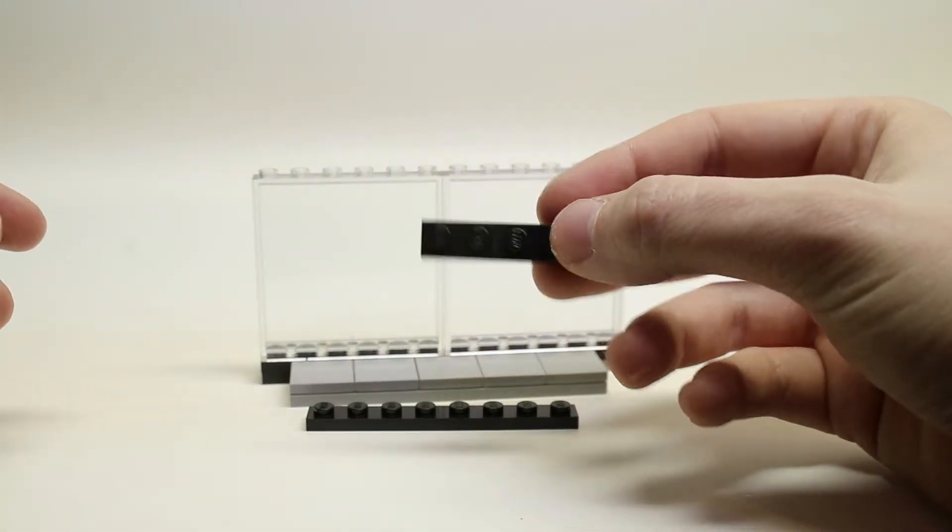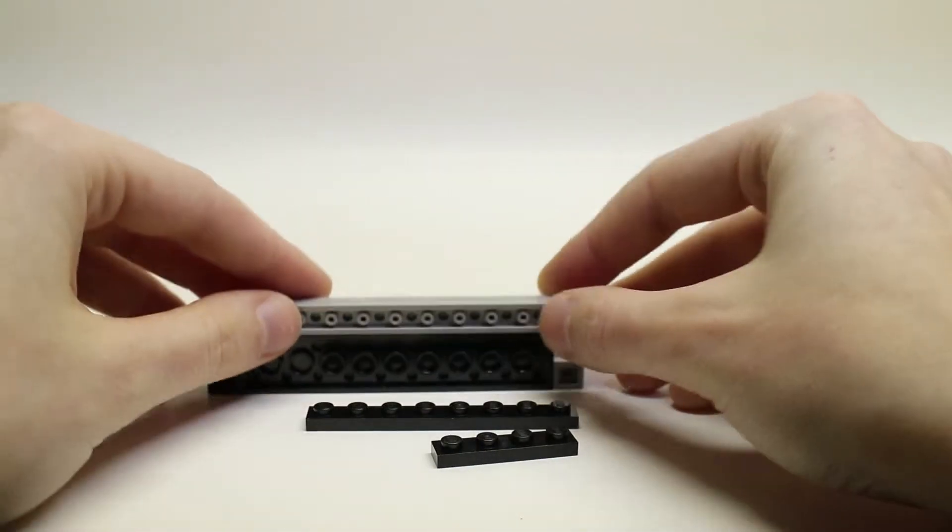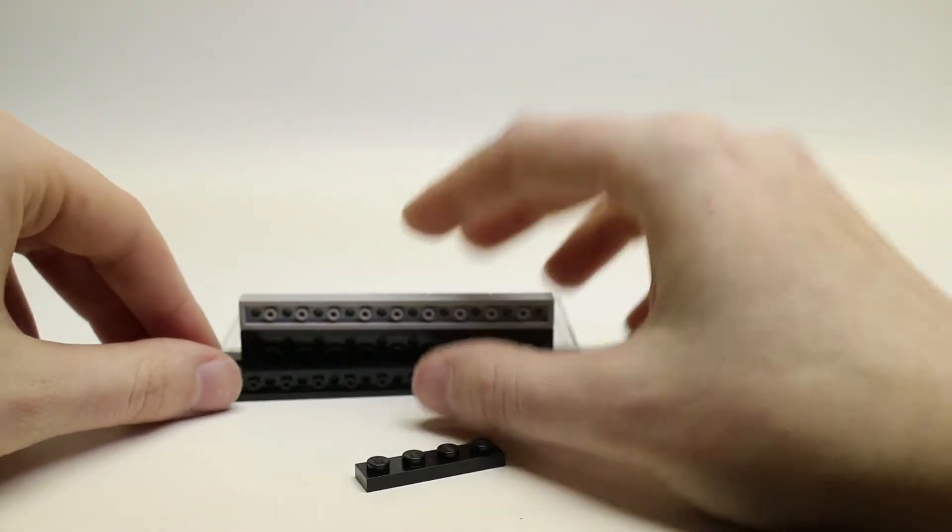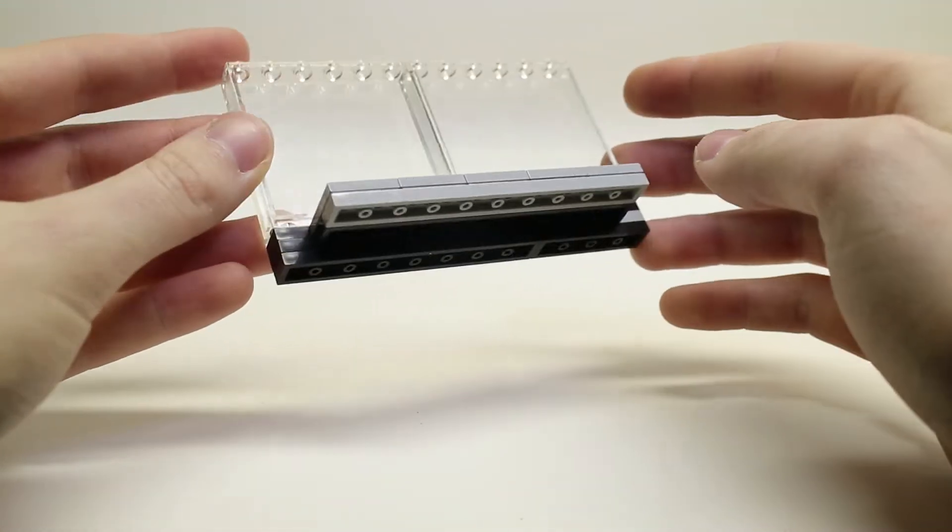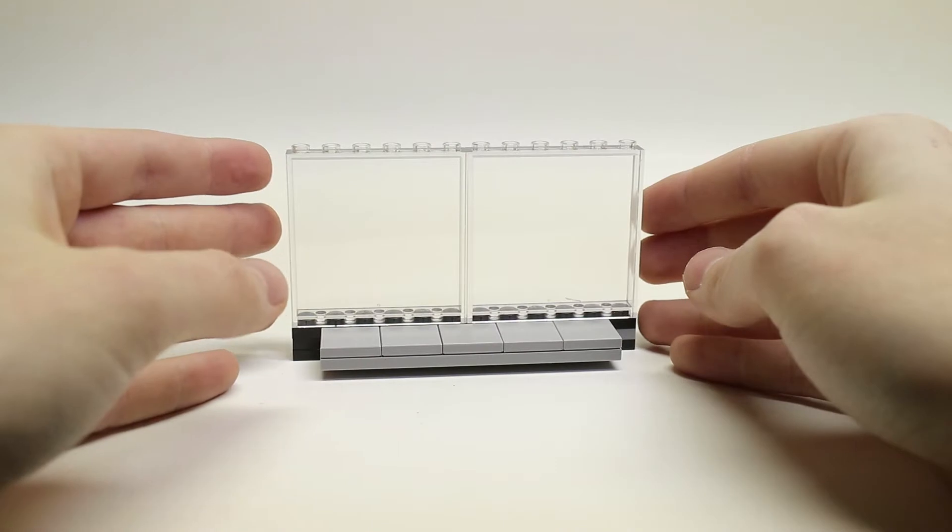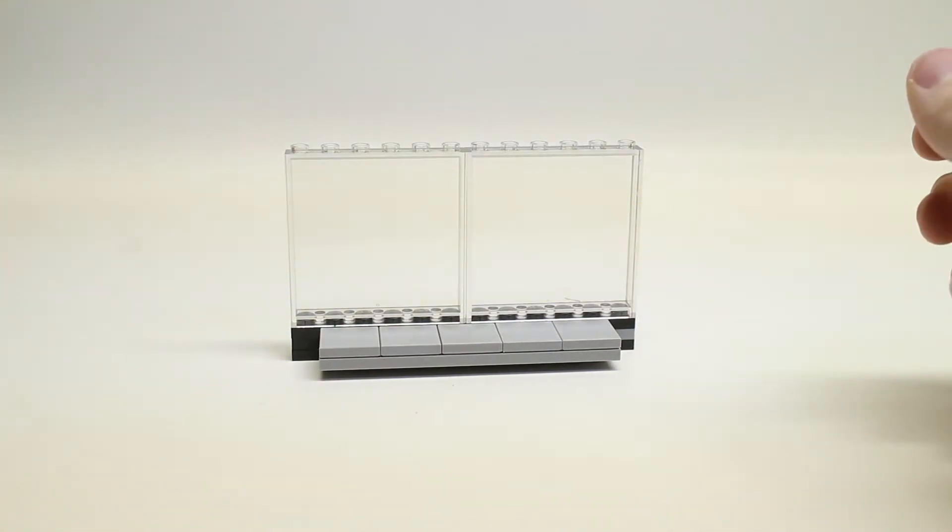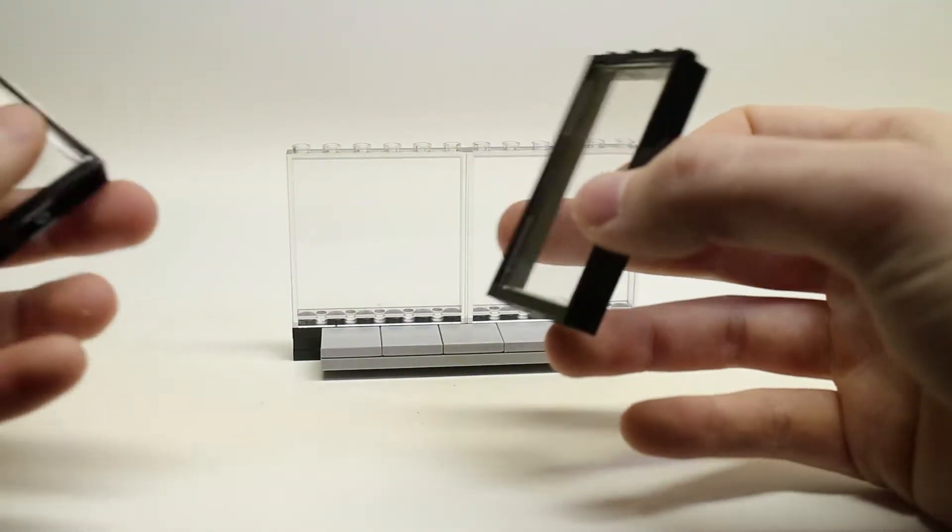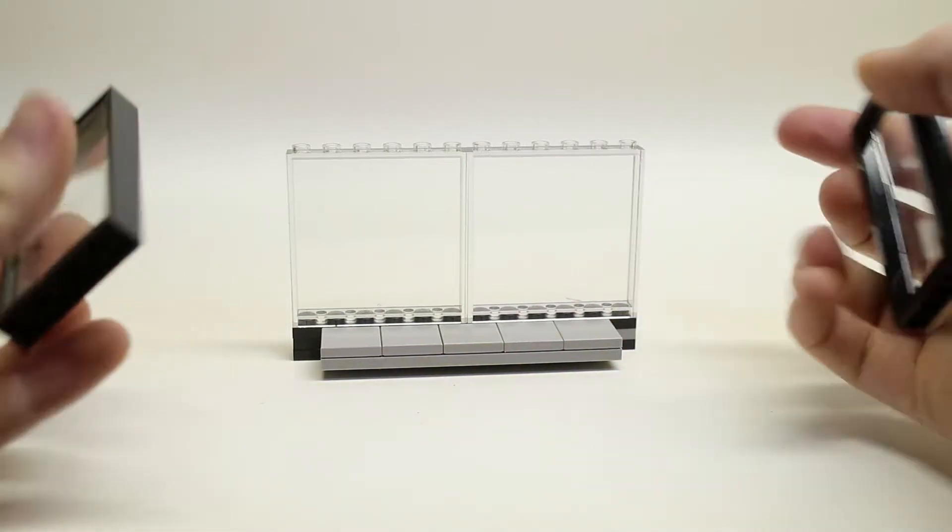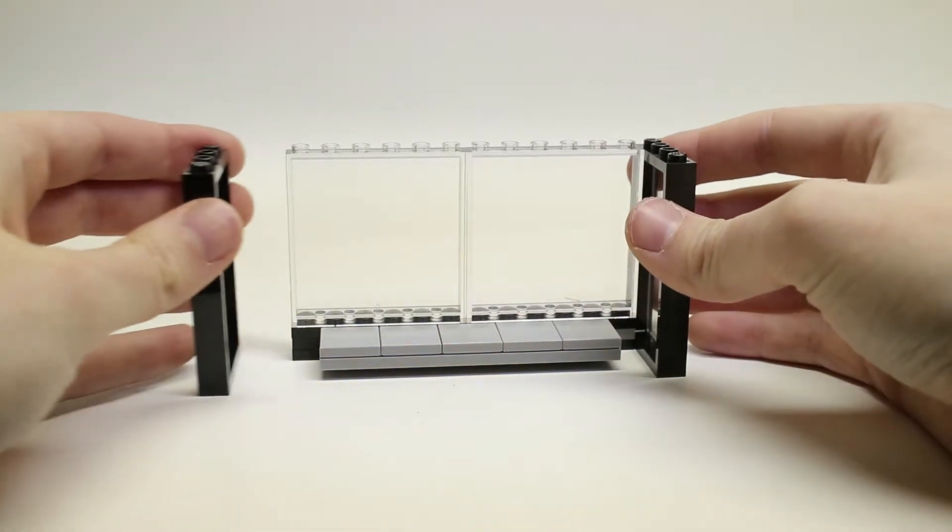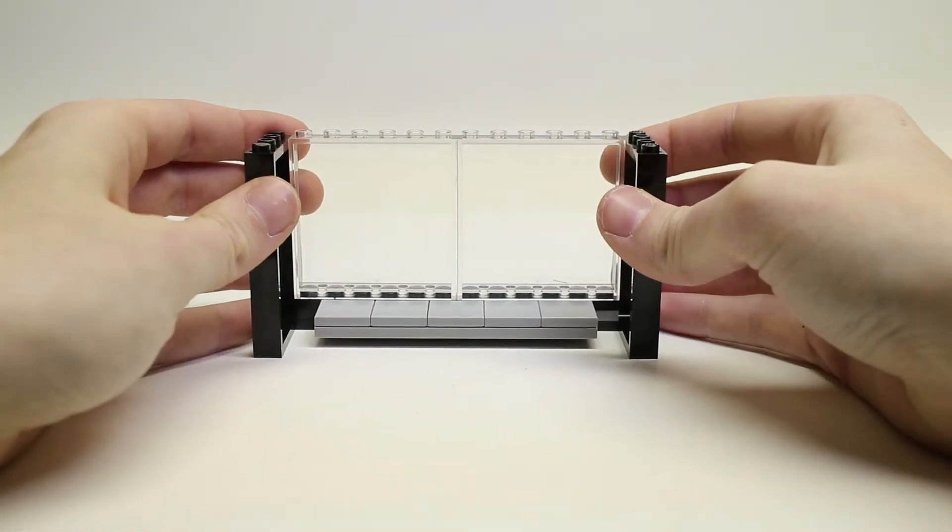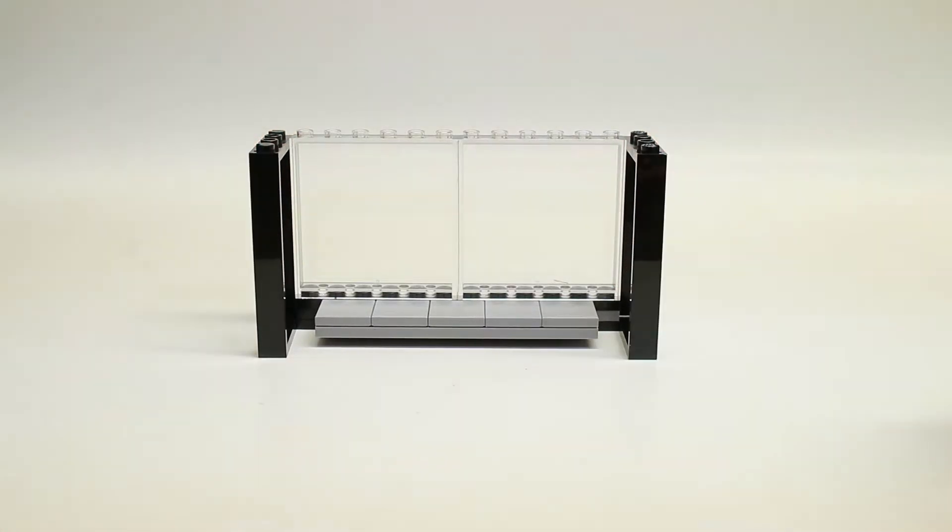And place them along the bottom. Now you're going to need your two other window pieces and you are going to place them side by side with the big clear windows.